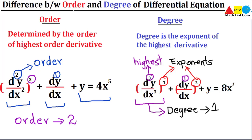We have seen the difference between order and degree: order is the order of the highest order derivative, and degree is the exponent of the highest order derivative. Once you get these concepts it will be easier to find the order and degree of any differential equation. To summarize: order is the power of 'd' — the derivative order — and that should be the highest; degree is the exponent of that highest derivative. That's all from today's lecture, thank you.